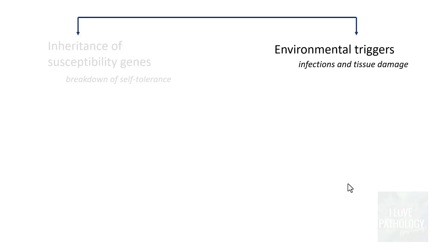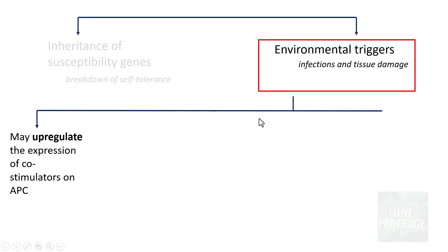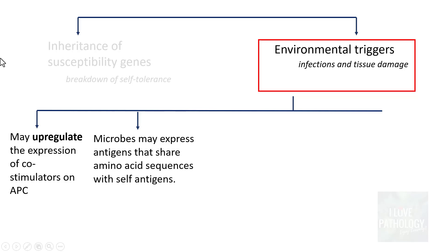Regarding environmental triggers like infections and tissue damage: first, these triggers may upregulate the expression of co-stimulators on antigen-presenting cells, resulting in activation of self-reactive lymphocytes and reactions towards various self-antigens. Second, microbes may express antigens that share amino acid sequences with self-antigens — this is called molecular mimicry.